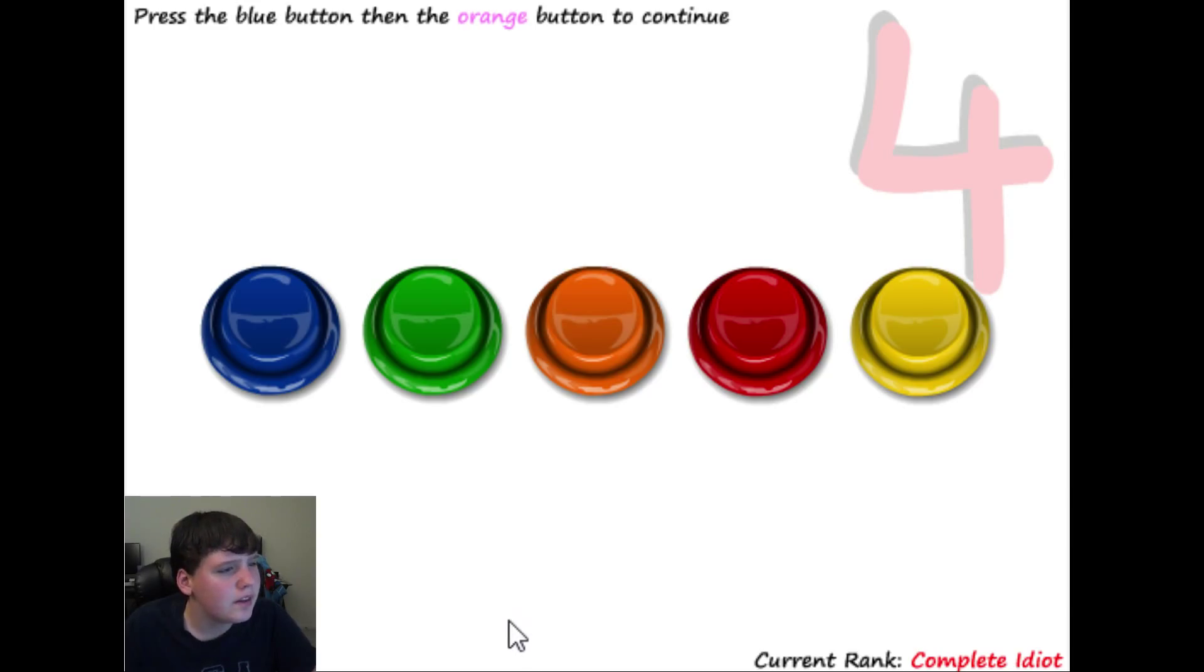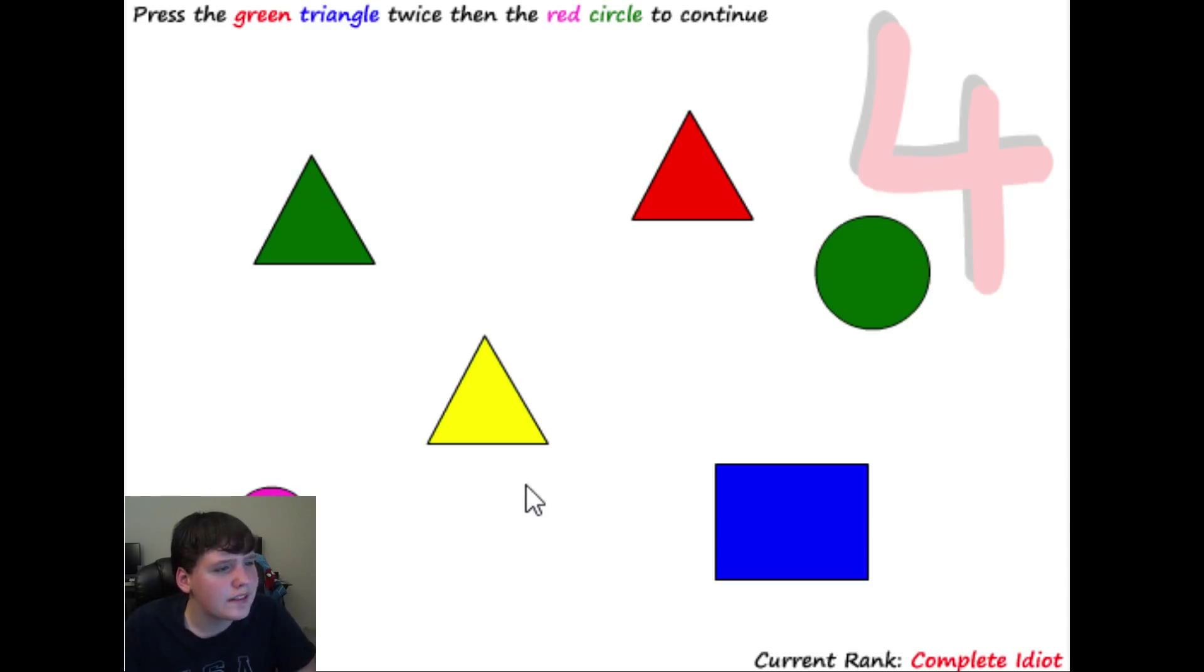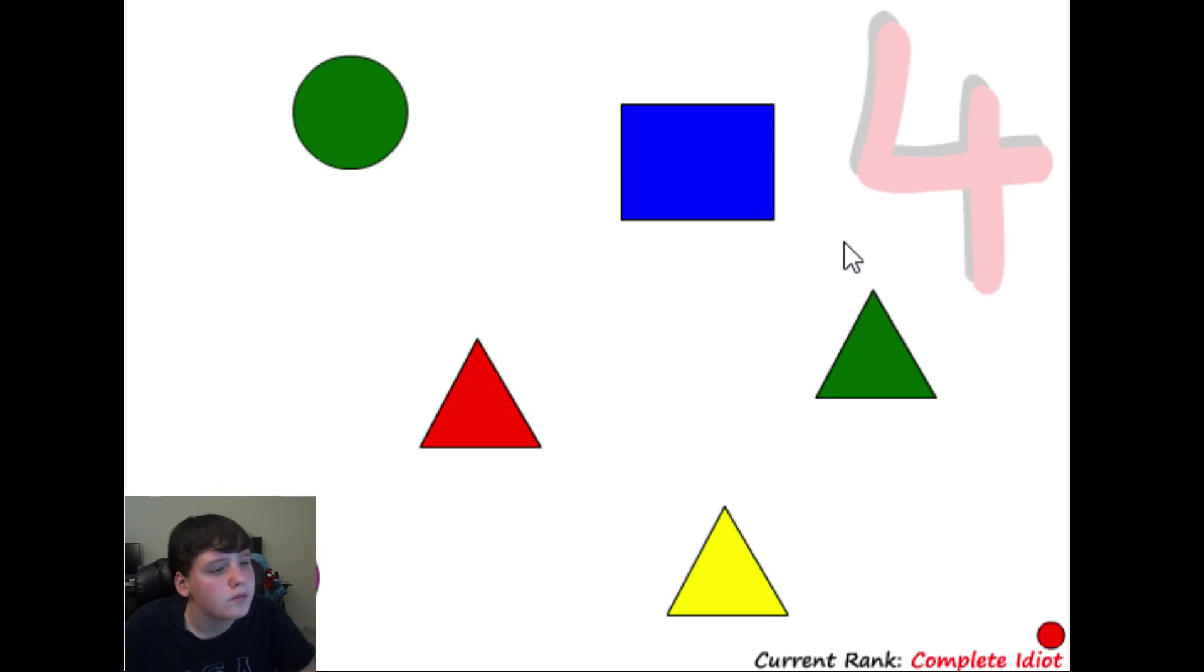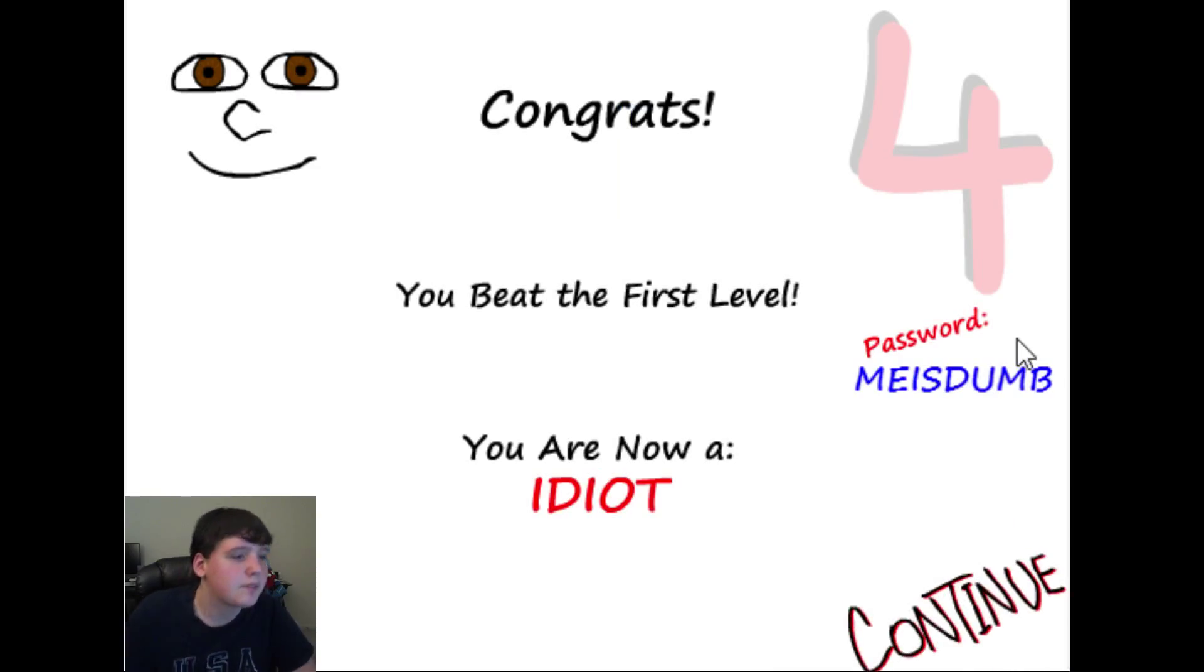Press the blue button, then the orange button to continue. Why are they like mixing up the colors? It's like messing with my head. Okay, blue and then orange. Alright, press the green triangle twice, and the red circle to continue. Green triangle twice, red circle once. Wait, what? There's no red circle. There's only a green and a pink. Oh, okay, then. Red circle. Oh, here it is. Could have gotten me there. Congrats, you beat the first level. You are now an idiot.